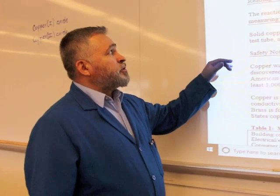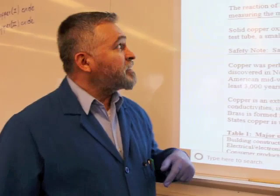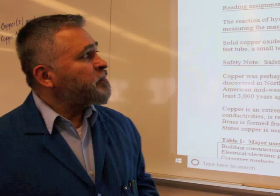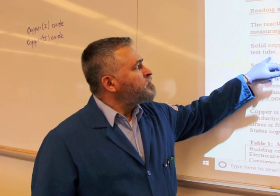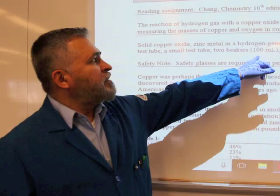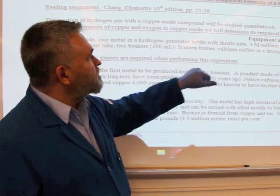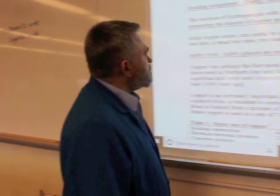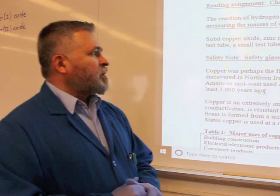The materials you are going to need are solid copper oxide — I'll show you that — zinc metal in a hydrogen generator barrel, and also three molar sulfuric acid. We will need a large test tube, brand new, a small test tube, two beakers of 100 ml each. We will need a Bunsen burner, and also calcium sulfate in a drying tube.